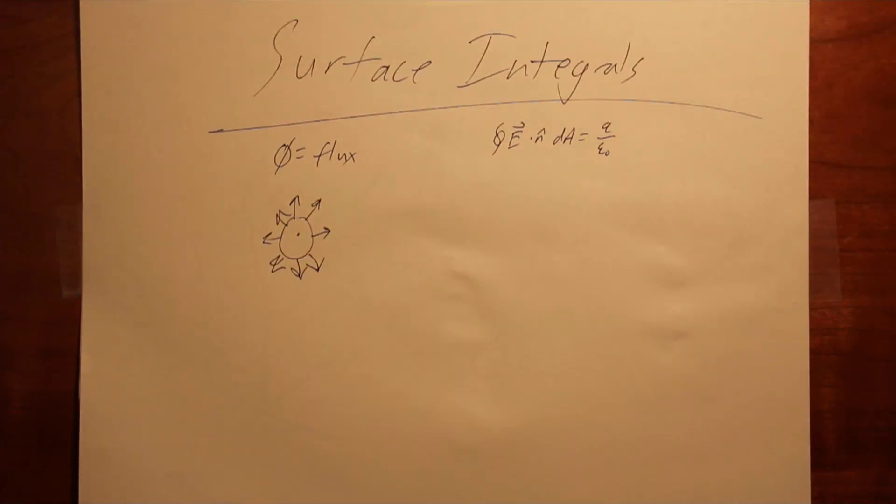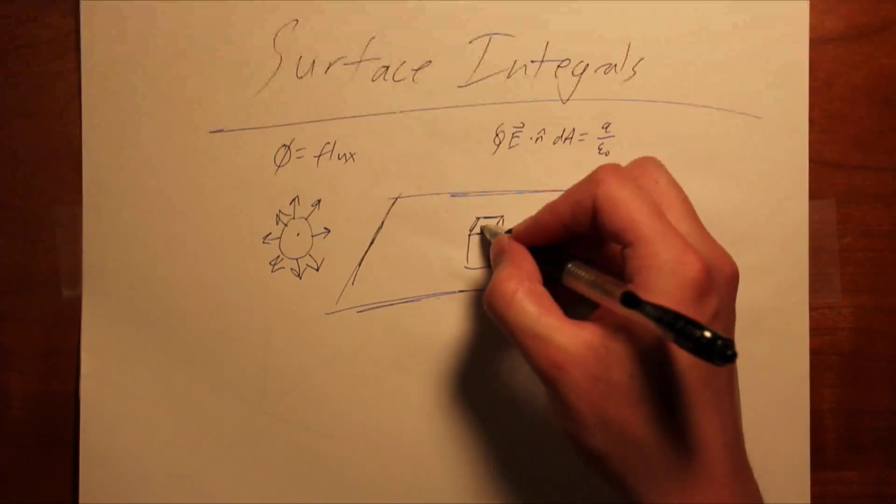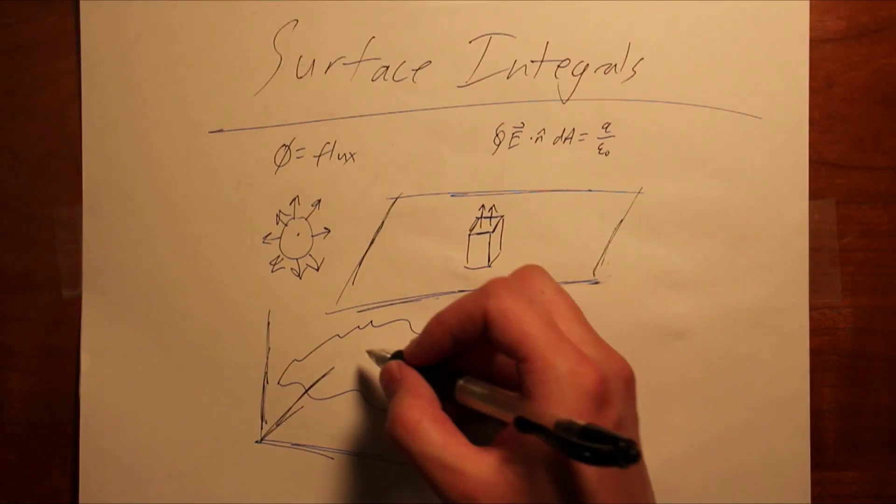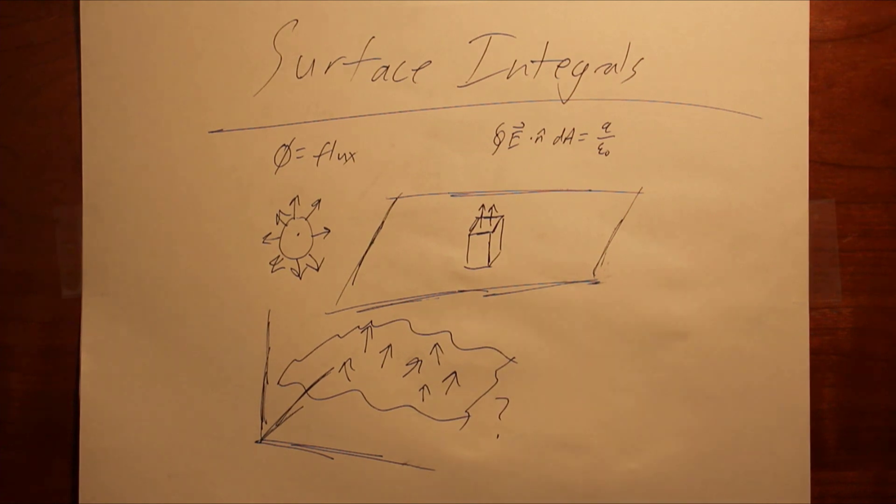But what if things aren't nice and clean like a sphere around a point charge or a prism through an infinite plate? How would one go about using Gauss's law with ugly surfaces and ugly fields? We will use Gauss's law as an example merely for convenience, but keep in mind that flux has many varied applications.